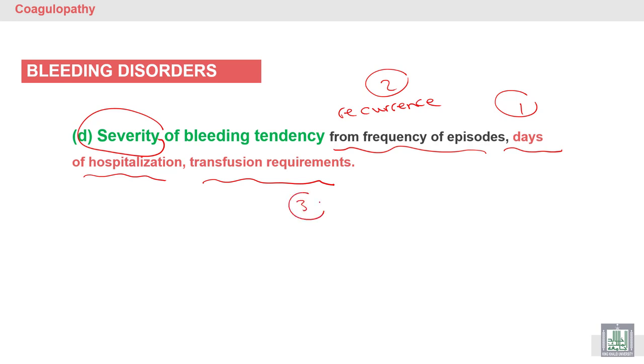Transfusion requirement means that the bleeding needs blood transfusion or does not need blood transfusion. If the bleeding patient needs transfusion, it means that it is severe. But bleeding without transfusion means that it is not severe.